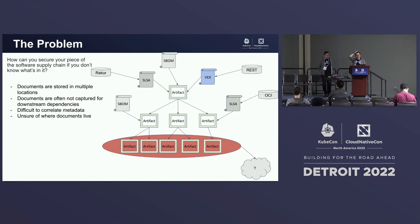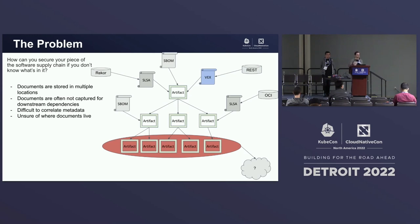What's the problem we're trying to solve? There's a lot happening in your software supply chain. You keep hearing: I need to generate SLSA, I need to consume SLSA, I need to generate SBOMs, I need to make sure everybody else has SBOMs, I need to analyze those SBOMs. But one of the big problems people keep bringing up is: how do I know if something has an SBOM? How do I know if it's been consumed already?